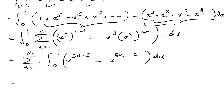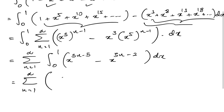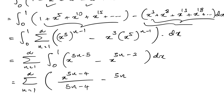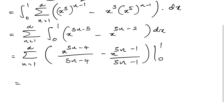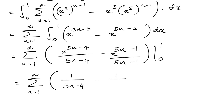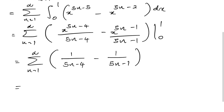Let's integrate using the general power rule. We get the sum from n=1 to infinity of: x^(5n−4)/(5n−4) minus x^(5n−1)/(5n−1), evaluated with limits from 0 to 1. Applying the upper and lower bounds, we have the sum from n=1 to infinity of 1/(5n−4) minus 1/(5n−1).